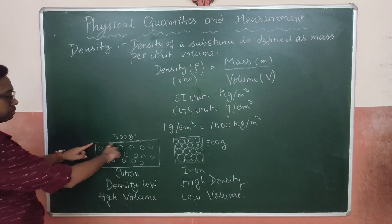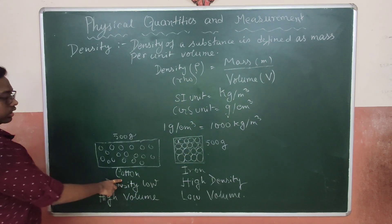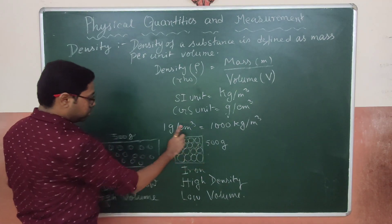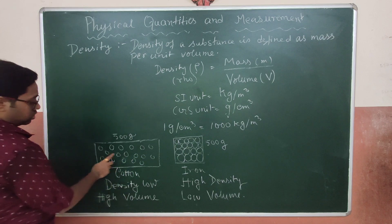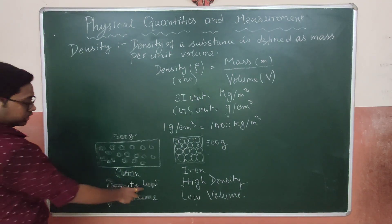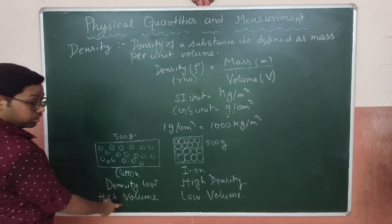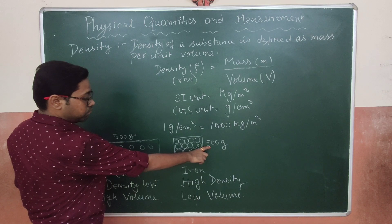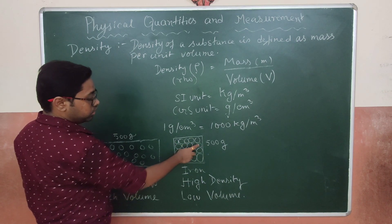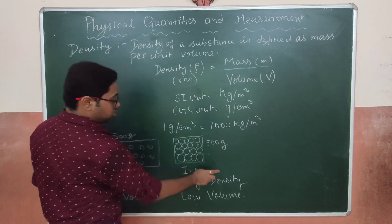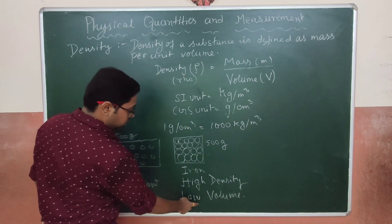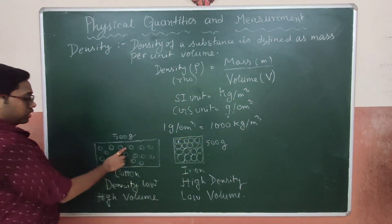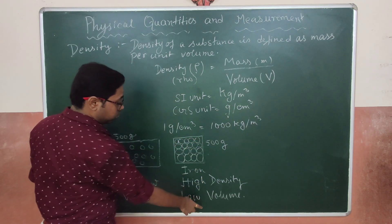Consider two boxes: one filled with cotton and one with iron. Both have the same mass — 500 grams each. In the cotton box, the molecules are very far apart, so the density is low. Since density is low and mass is the same, the volume is higher, making the cotton box quite big. For the iron box, molecules are very close together, density is high, and since mass is the same, the volume is low — so the iron box is very small.